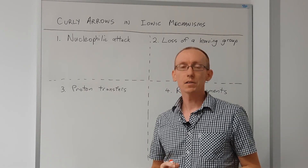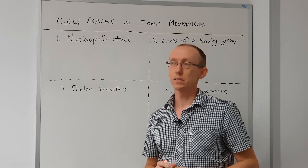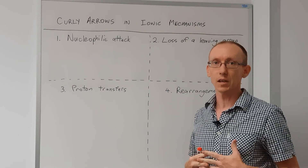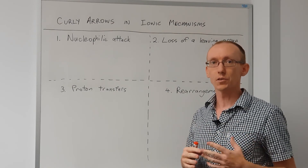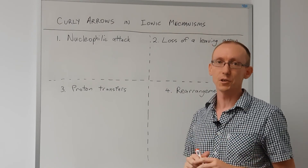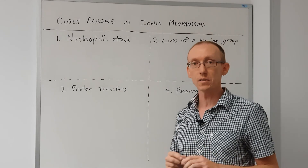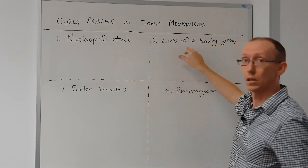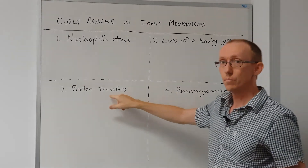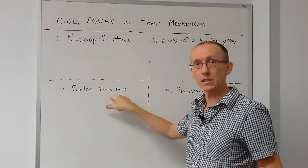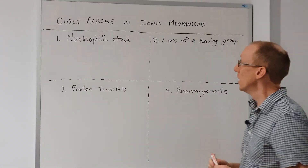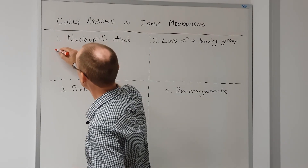This video is about curly arrows and ionic mechanisms. There are four different types of curly arrows that you can use to describe the vast majority of organic reactions. These are nucleophilic attack, loss of a leaving group, proton transfers, and rearrangements. An example of a nucleophilic attack would be if we had...